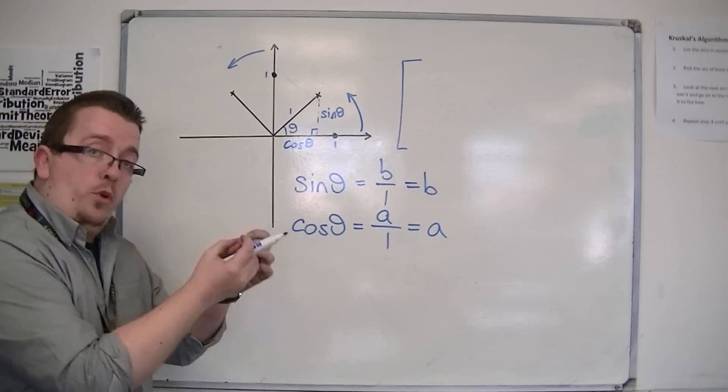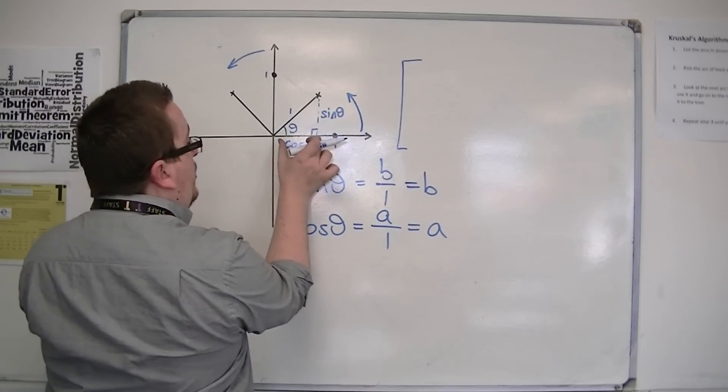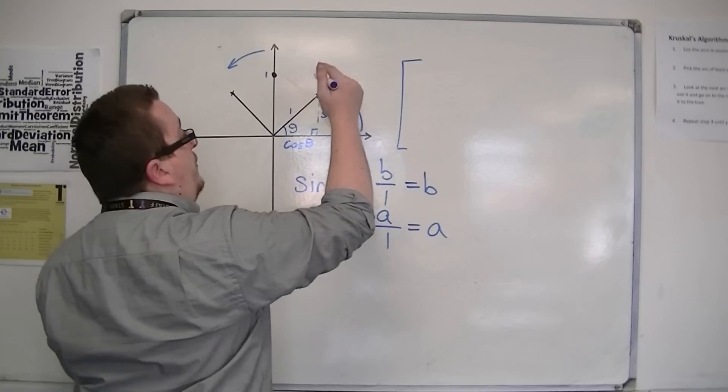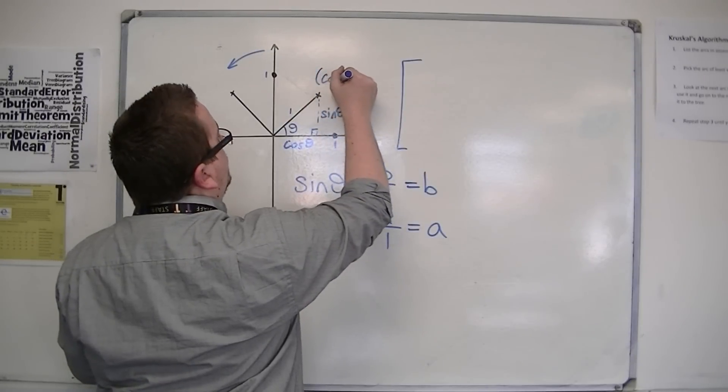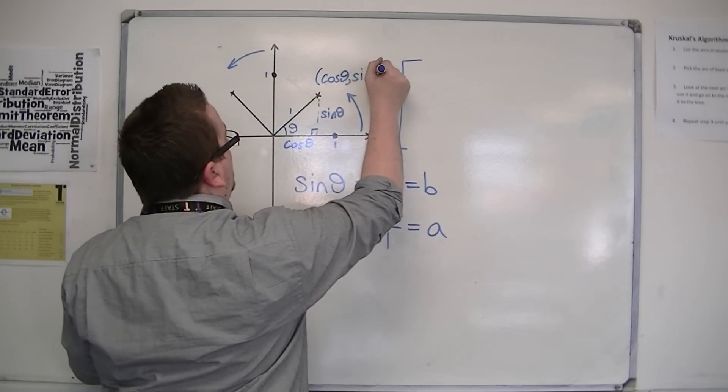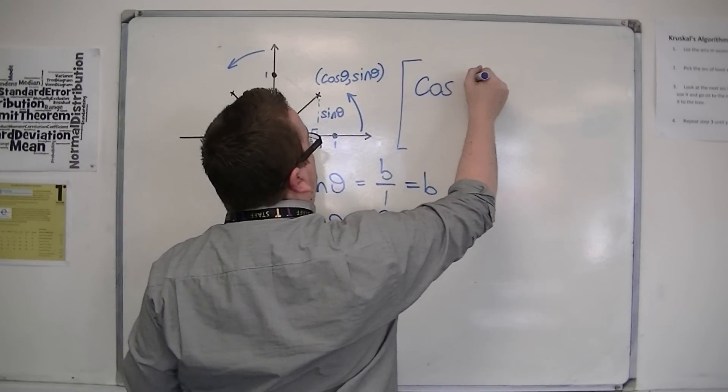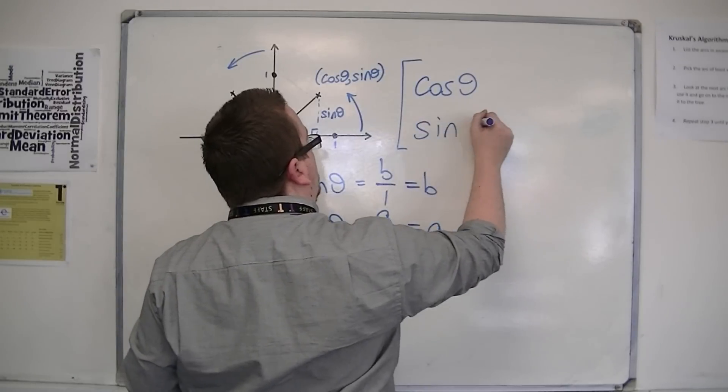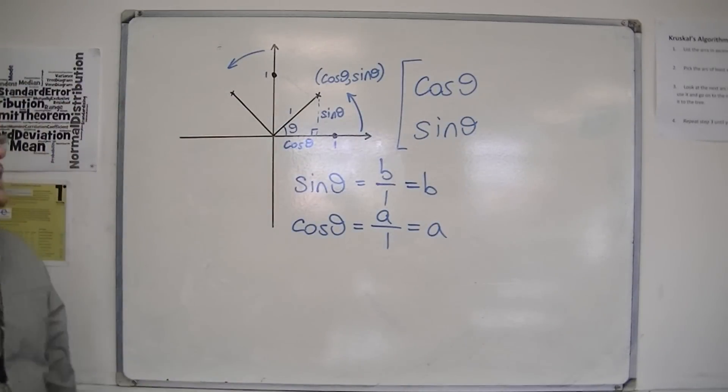So that means I now have the coordinates of that point, because it is cos theta along and sine theta high. And so I know the first column of my matrix is cos theta, sine theta.